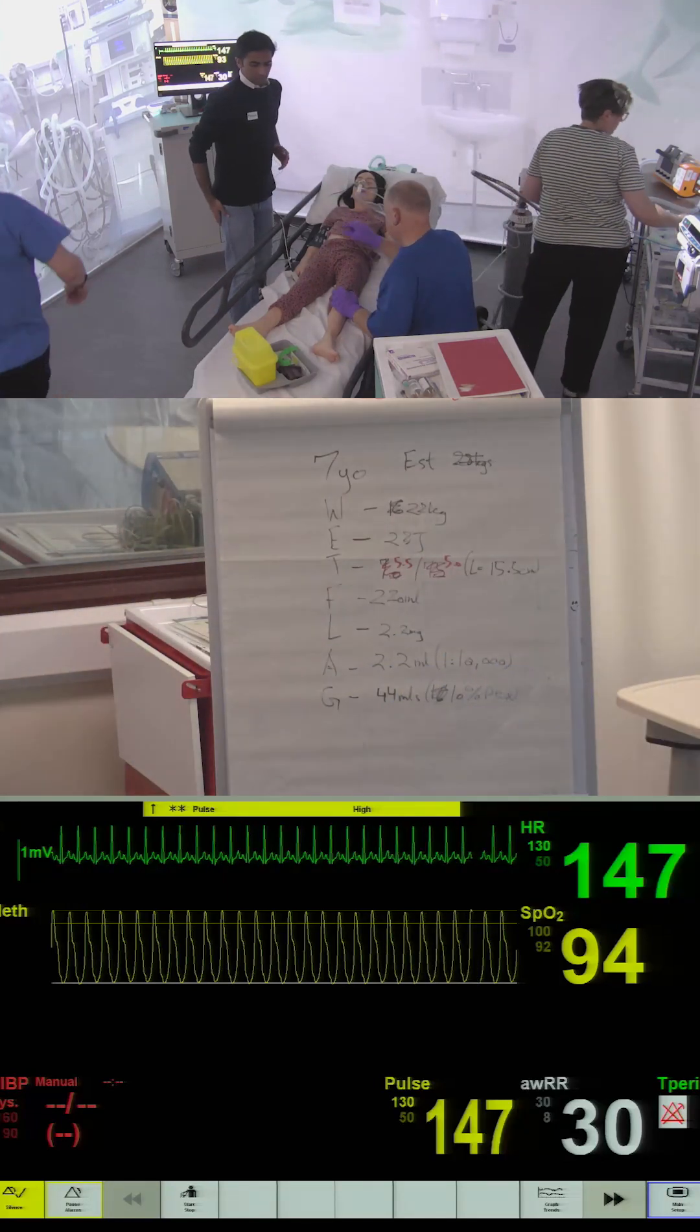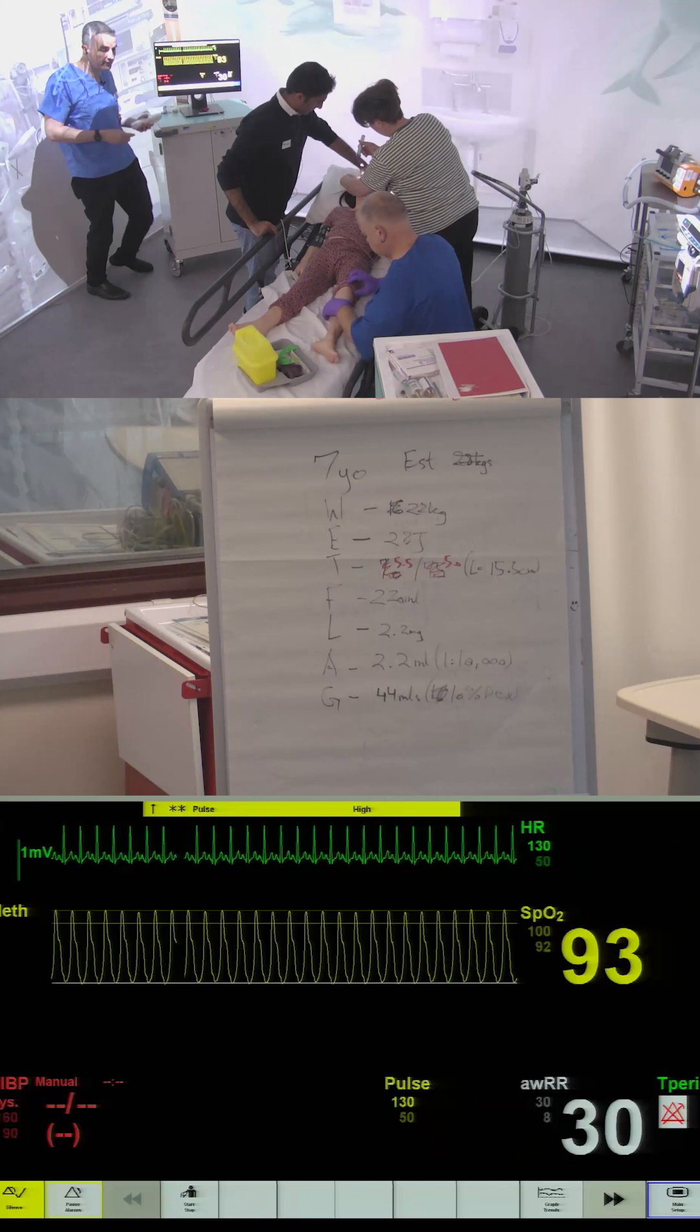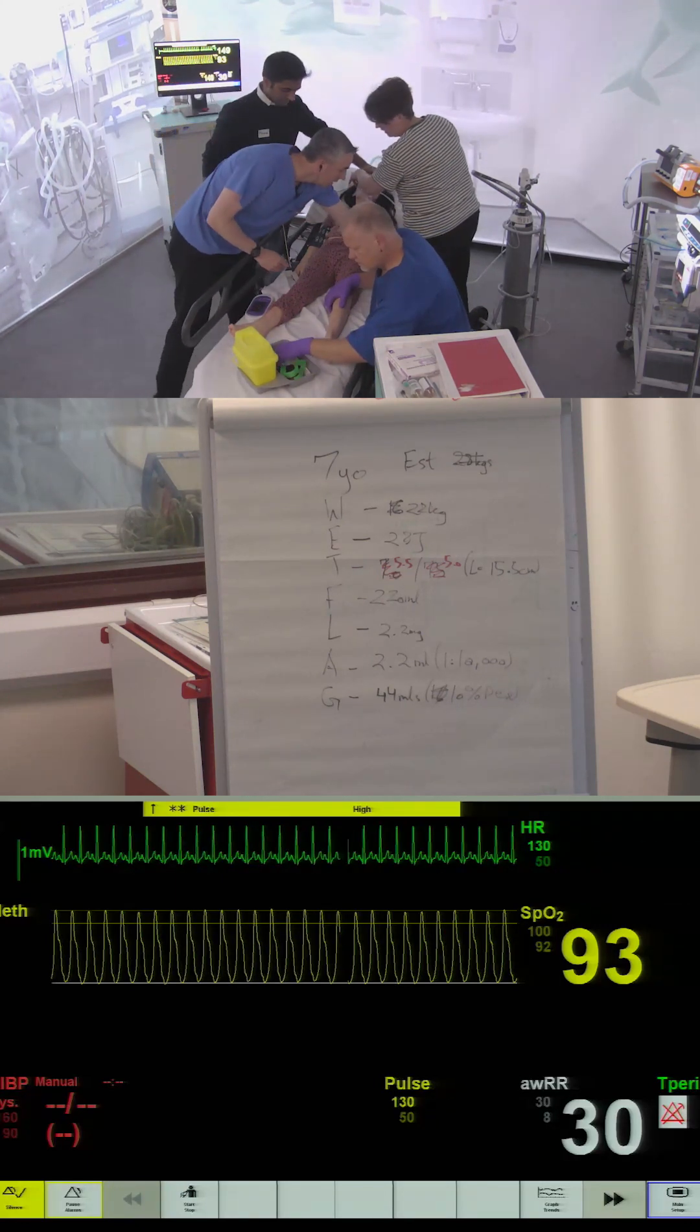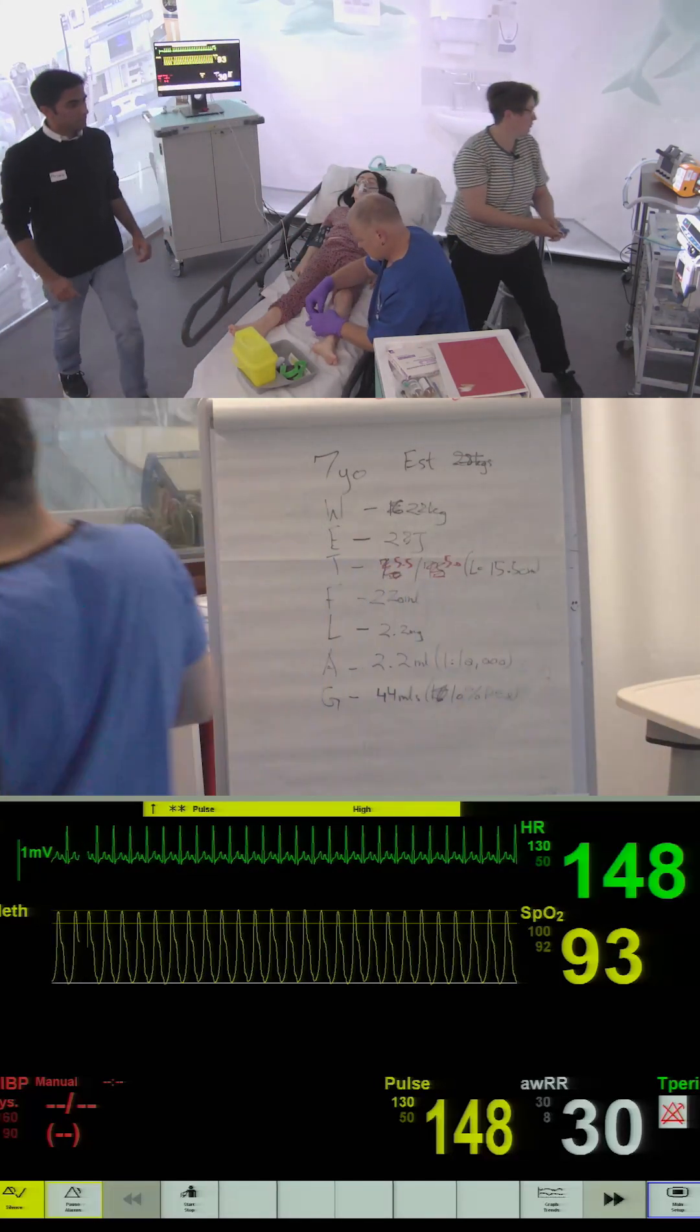What are our pupils like? Is that temperature 38.5 there? 38.5, so she's febrile, she's drowsy, she's got a rash. What are our pupils like there? Anyone?